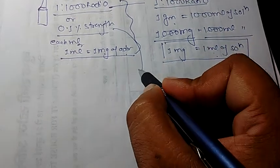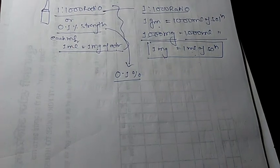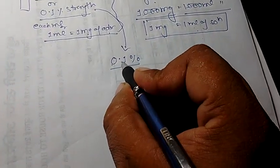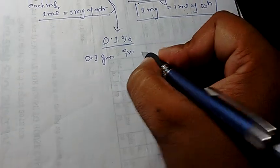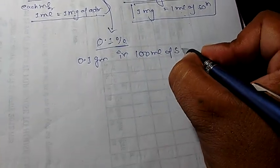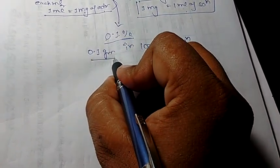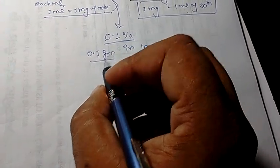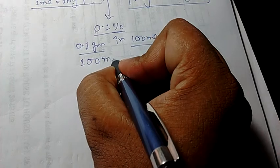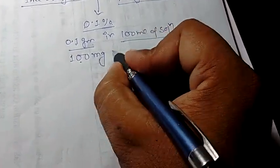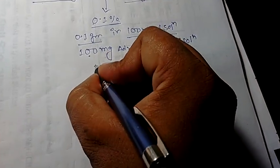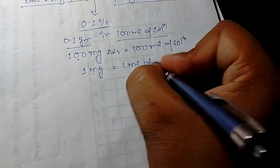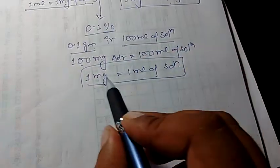The second one is 0.1% strength — a little bit confusing, but do not confuse the ratio with the strength. 0.1% strength means 0.1 gram in 100 ml of solution. If we convert 0.1 gram to milligrams, it becomes 100 mg. So 100 mg of Adrenaline in 100 ml of solution means 1 mg of Adrenaline in 1 ml of solution. Got the point? It is the same result.